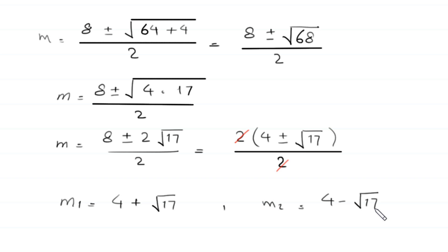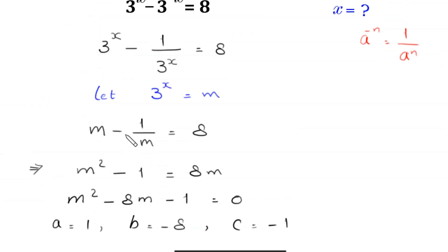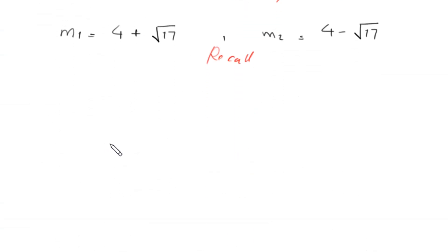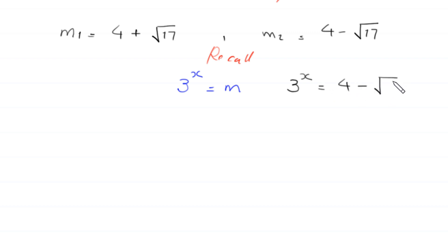But we need to find the values of x. Recall that we supposed 3 to the power x is equal to m. Now 3 to the power x is always greater than 0. Since square root of 17 is bigger than 4, the value 4 minus square root of 17 is less than 0. So no solution is possible from this equation.